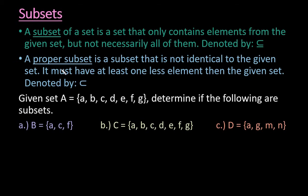But in order to be a proper subset, a proper subset has to be a subset that is not identical to the given set. It has to have at least one element less than the given set, and it's denoted by this symbol right here. Notice that this one is a sideways U without a line underneath it. This is the proper subset symbol.